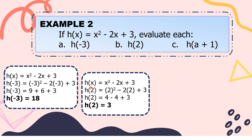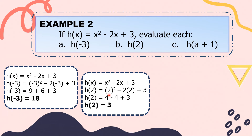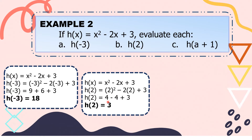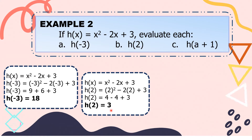For letter B, our function is still h of x equals x squared minus 2x plus 3. We substitute all x's with positive 2. So h of 2 equals 2 squared minus 2 times 2 plus 3. 2 squared is 4; negative 2 times positive 2 is negative 4; bring down plus 3. Simplifying: 4 minus 4 is 0; 0 plus 3 is positive 3. So h of 2 is equal to positive 3.